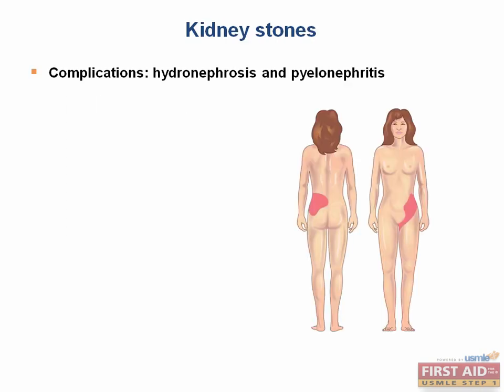Now let's move on to pathologies that don't affect the glomerulus directly. The first is kidney stones, also called nephrolithiasis. This results from precipitation of some kind of crystal in the collecting system of the kidneys. Complications include hydronephrosis — atrophy of the renal tissue due to compression by urine that cannot flow out when urinary outflow is obstructed by a stone — and pyelonephritis, because less urine flow makes it easier for bacteria to establish infections that can move up to the kidney.